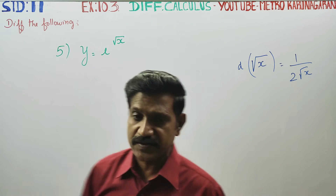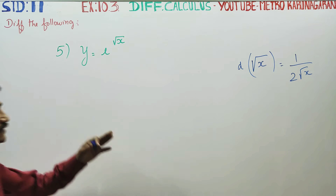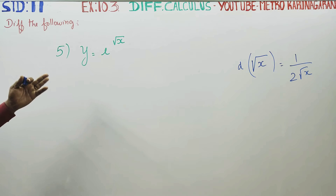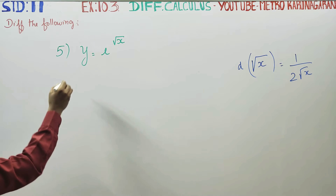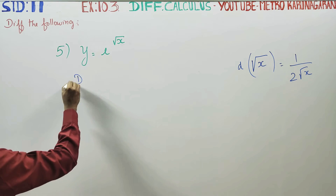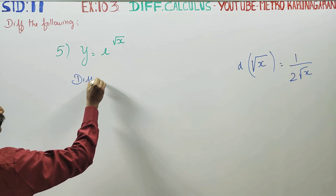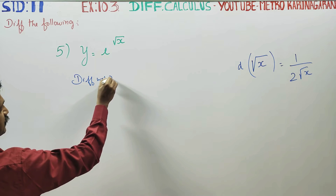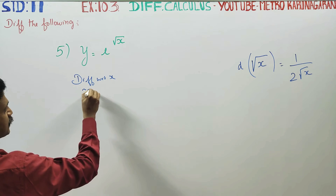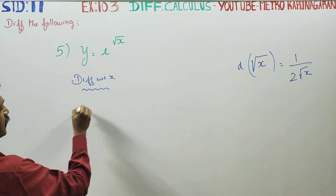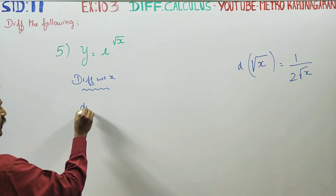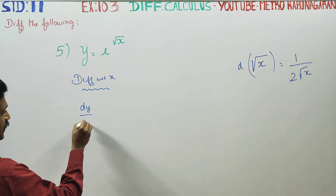With this basic idea from the last exercise, we will start with the sum. Differentiate with respect to x. Find dy by dx.